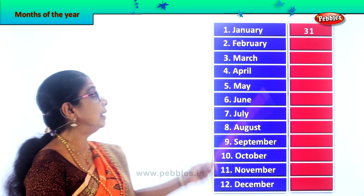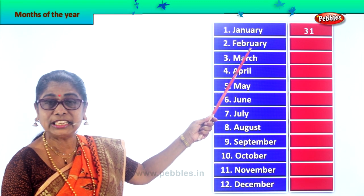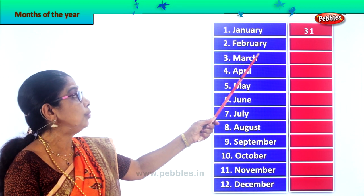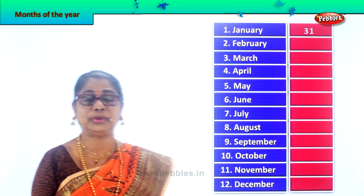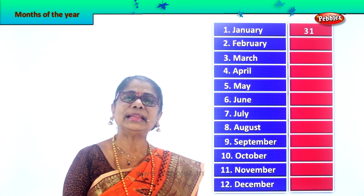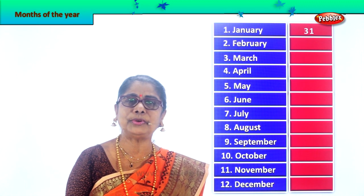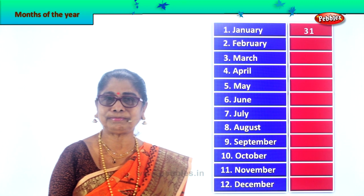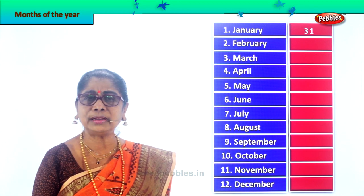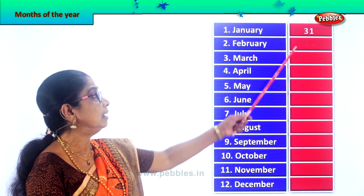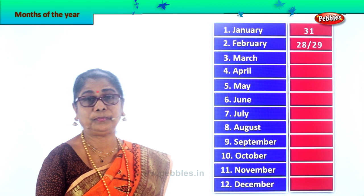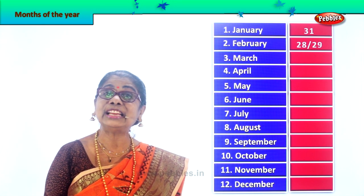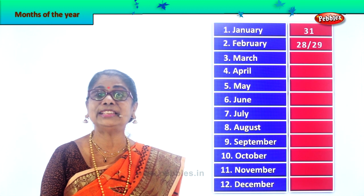The second month is February. Spell February — F-E-B-R-U-A-R-Y, February. Normally, February is supposed to be the shortest month. It comes and goes fast, and the number of days is 28. The month of February has 28 days only.